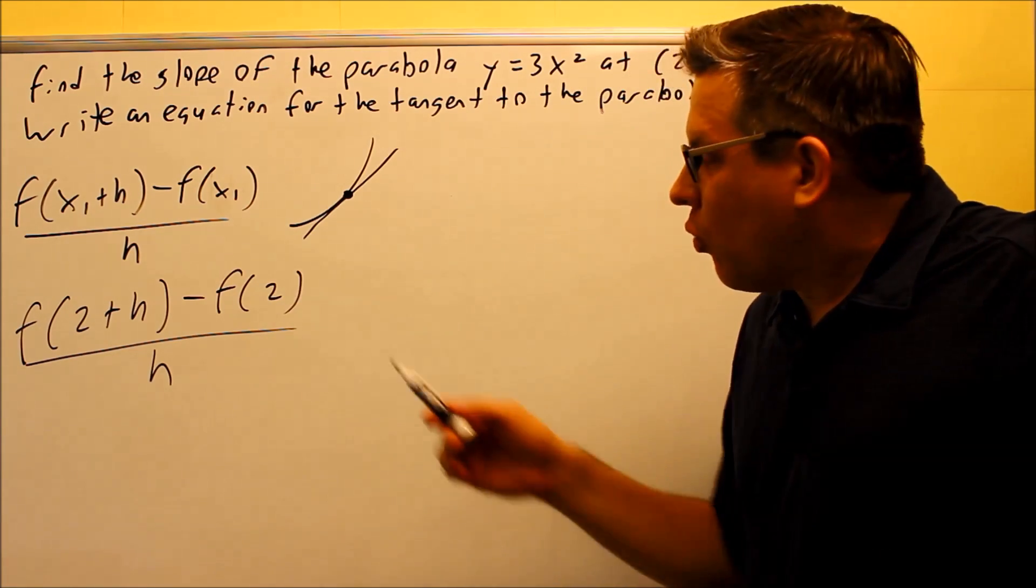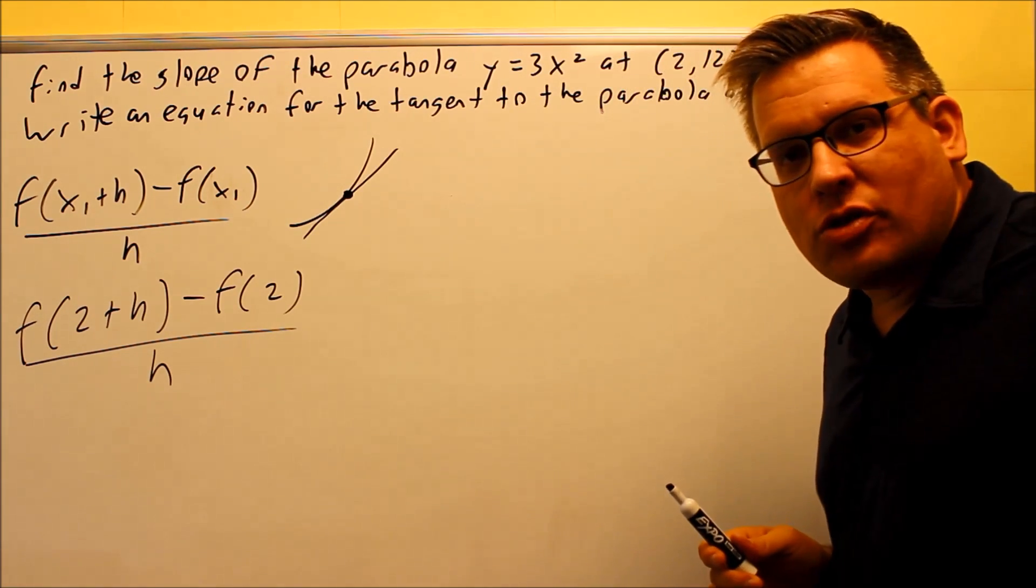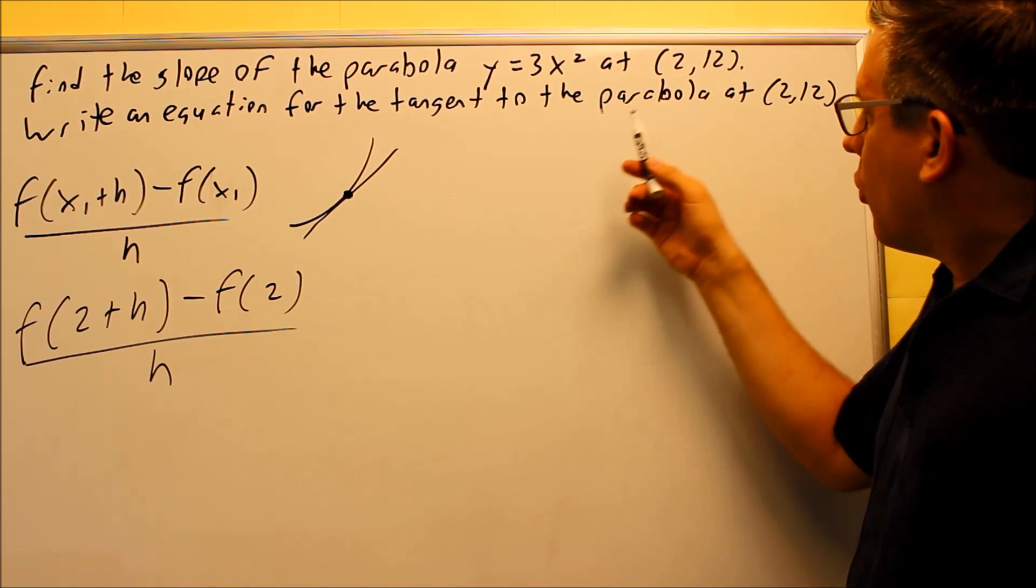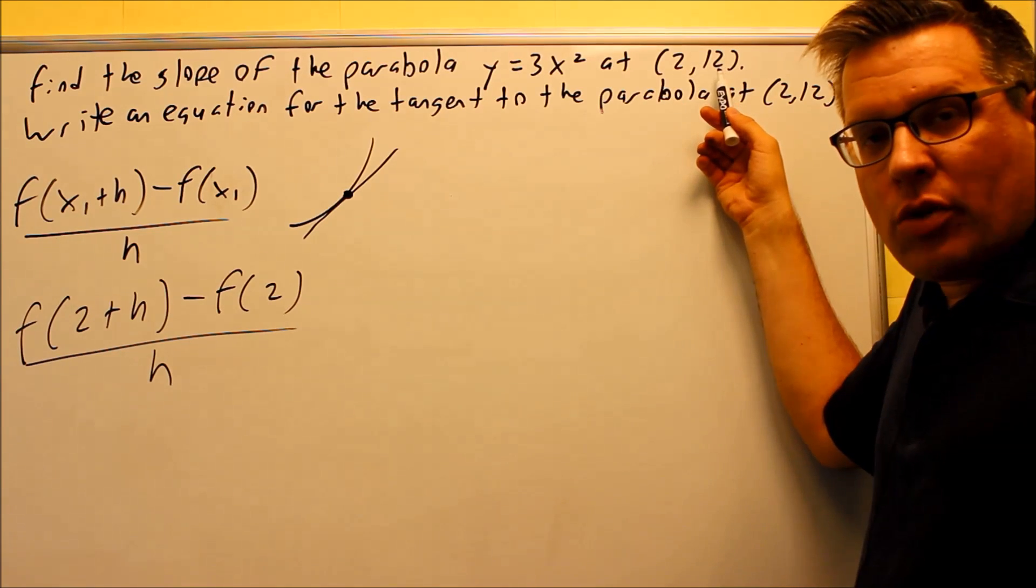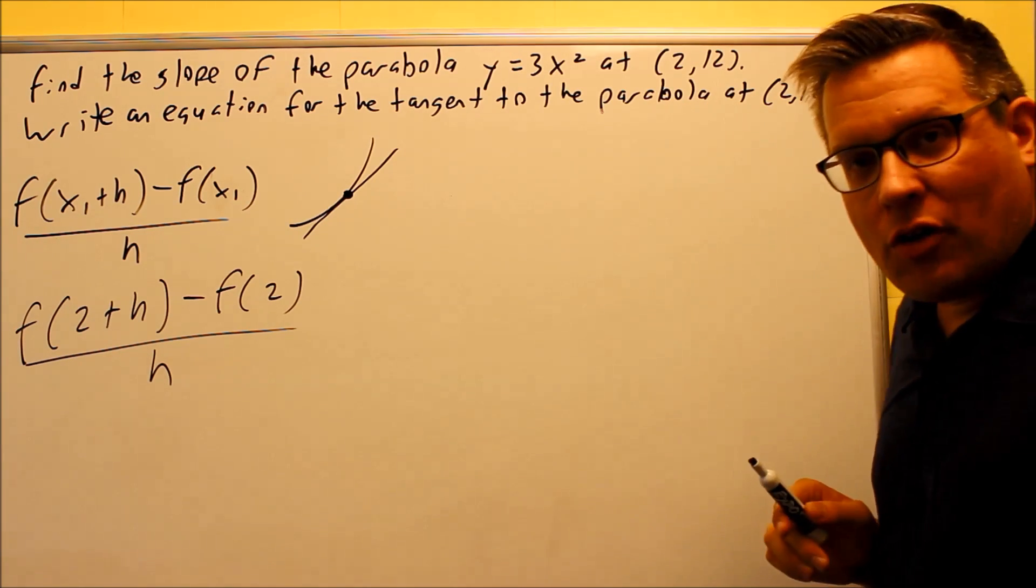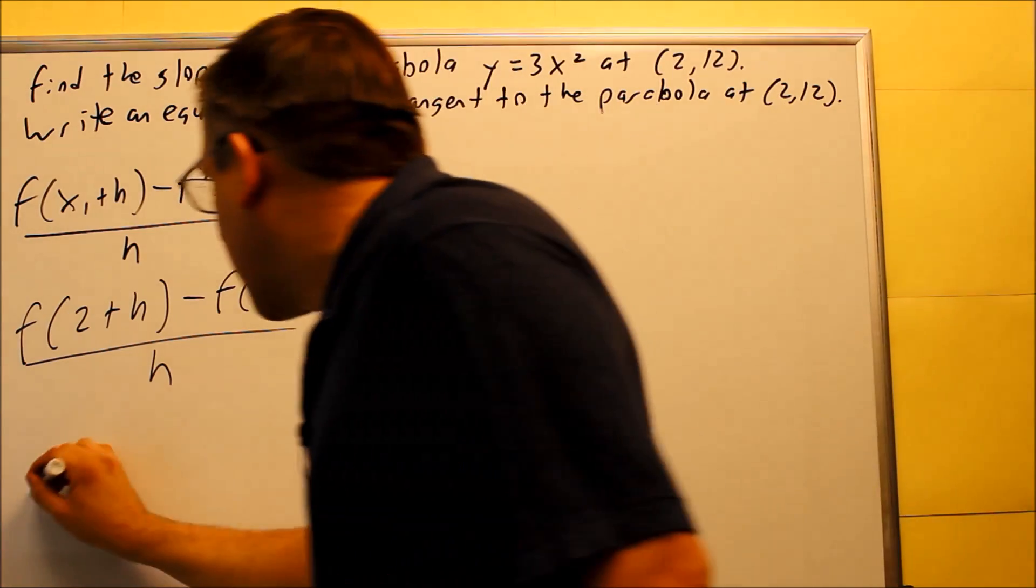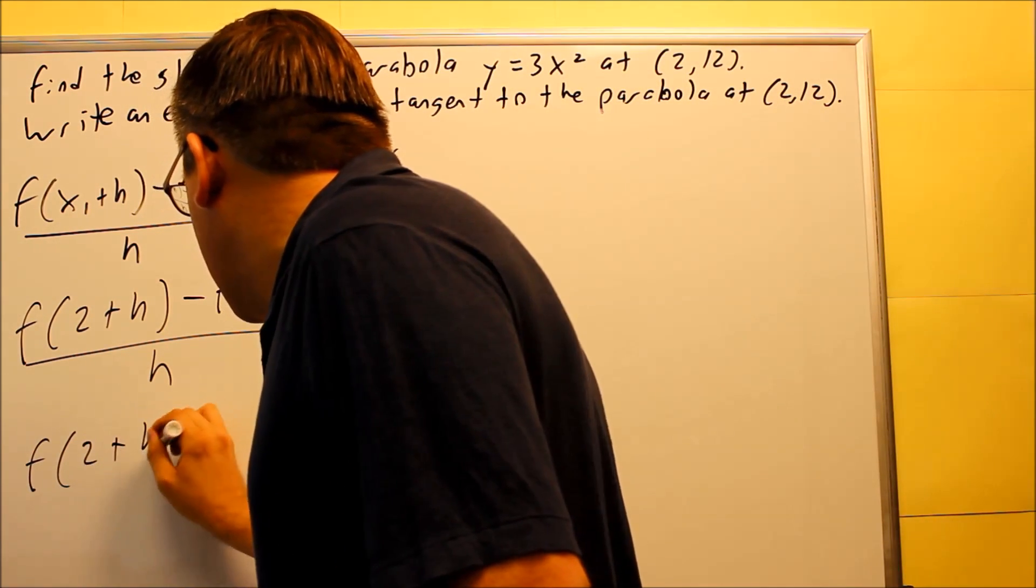What this is saying, they want to find the y value when x is equal to 2. Well, the y value when x is 2, that's the point that we have that we're given earlier. That's going to be 12. So automatically I can write this as f of 2 plus h and then minus 12 over h.